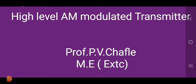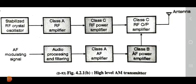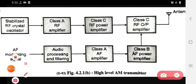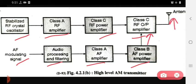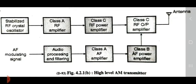Today we see the high level AM modulated transmitter. First we see the block diagram. In the block diagram, the blocks available are: stabilized RF crystal oscillator, class A RF amplifier, class C RF power amplifier, class C RF output amplifier, class B AF power amplifier, class A AF amplifier, audio processing and filtering, and the AF modulating signal. These blocks connect to the antenna.